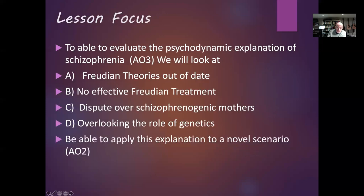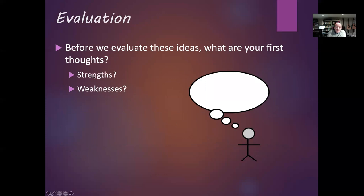You need to use all of this information and be able to apply it in a novel scenario, which you might get in an exam. You might want to pause and ask yourself, looking back on Freud's and Fromm-Reichmann's explanation of schizophrenia, what are the strengths and weaknesses of what they put forward? Make notes in the handout and be ready to produce a summary sheet so you could write an essay on this material.